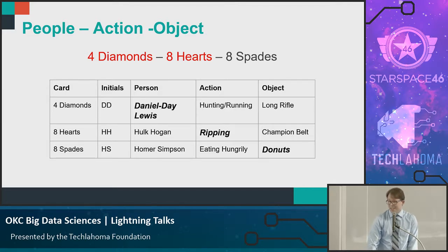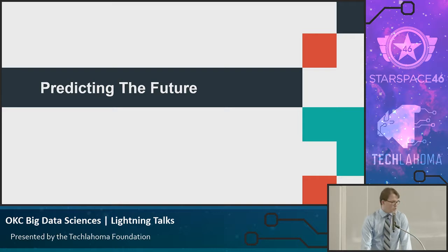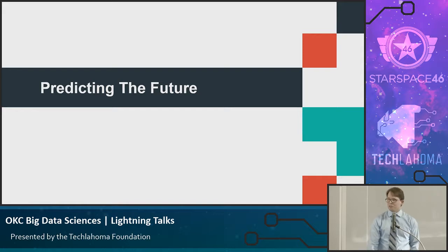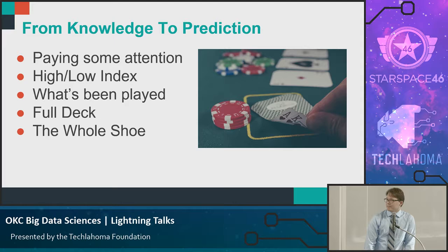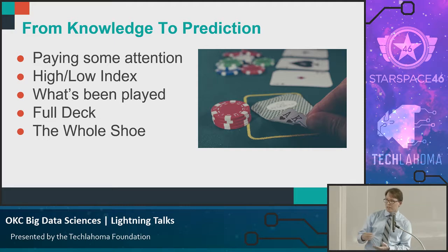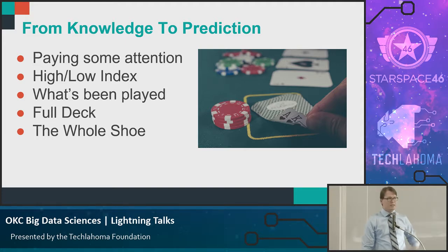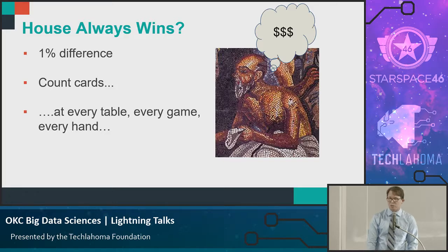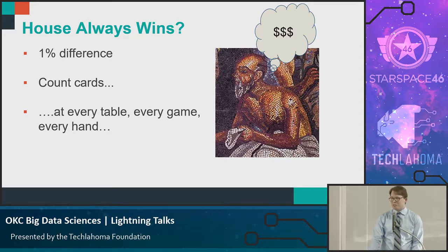The memory system Simonides came up with — the one world champions use — is hard to forget. Likewise, once data is on the internet it doesn't go away, so that principle still applies. Once you have your big data mastered — stored, extracted, transformed, loaded — it's time to predict the future. You could win in Vegas. You can start by paying attention to what's been played, keep a high-low index, or memorize the full deck. The goal is to get from knowledge to prediction. The difference between breaking even and being the house is about one percent — small, but you win more long term.